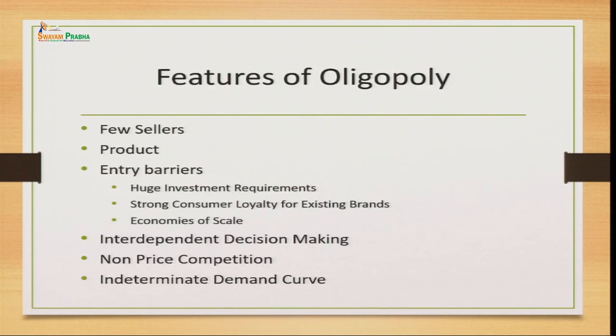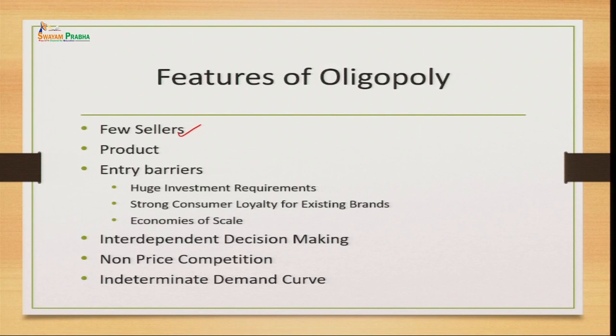Let us look at the features of this oligopoly market. We have few sellers — the number of sellers is not very large. The product is again very important: either it is homogeneous or there is differentiation. There is an entry barrier — though there is no outright restricted entry, if you want to be a part of this oligopoly market there are barriers such as huge investment requirements. This is a market structure where if you want to enter, you need a lot of investment and huge capital requirement, which is not possible for everyone.